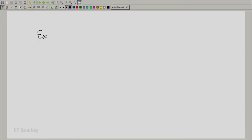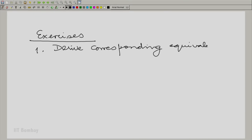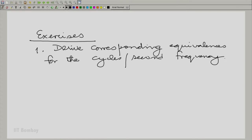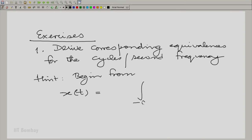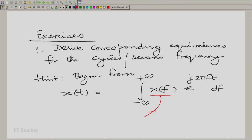Now I am going to give you two exercises. Exercise 1: derive the corresponding properties for cycles-per-second frequency. The hint is to begin from the equation — x(t) is the inverse Fourier transform written in terms of cycles-per-second frequency. Please remember: when we write X(f), do not interpret this as X(ω) with ω replaced by f.